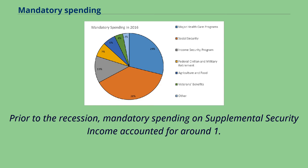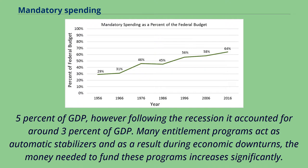Prior to the recession, mandatory spending on Supplemental Security Income accounted for around 1.5% of GDP; however, following the recession it accounted for around 3% of GDP. Many entitlement programs act as automatic stabilizers, and as a result, during economic downturns, the money needed to fund these programs increases significantly.